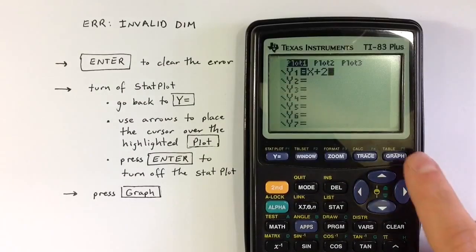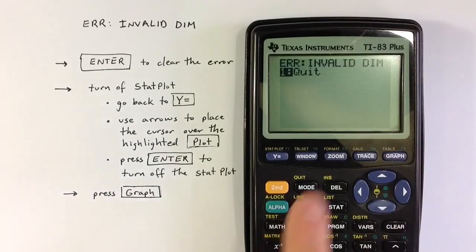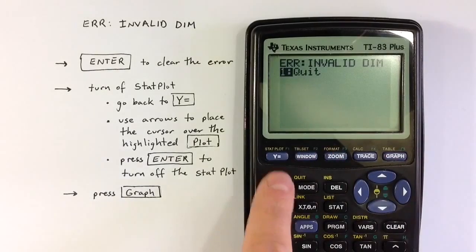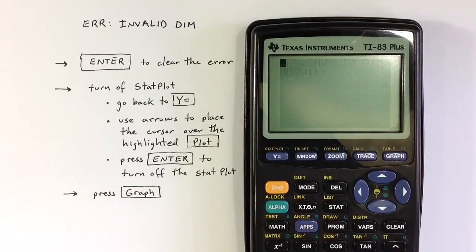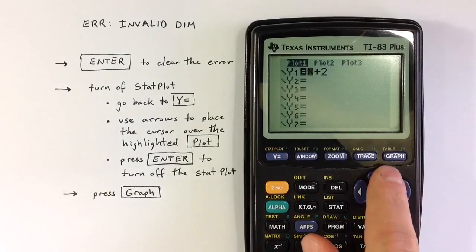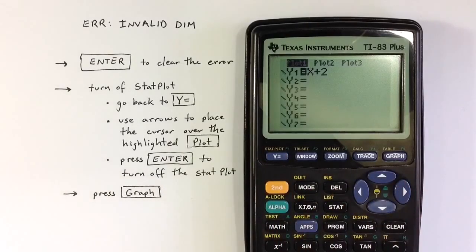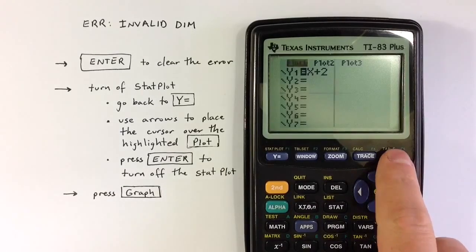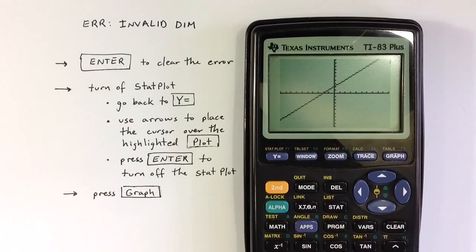So here's a quick review. If you hit the graph key and get the invalid dim error message, you can hit enter to clear that message, go back to the y equals menu, go up to the stat plot that's turned on, hit enter to turn it off, and then hitting the graph key should allow the calculator to create the graph.